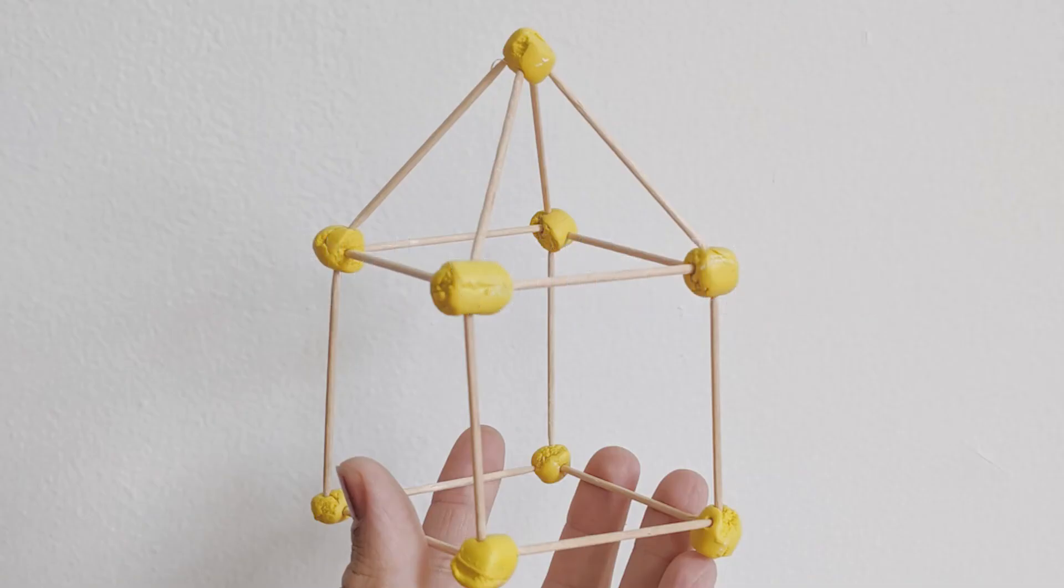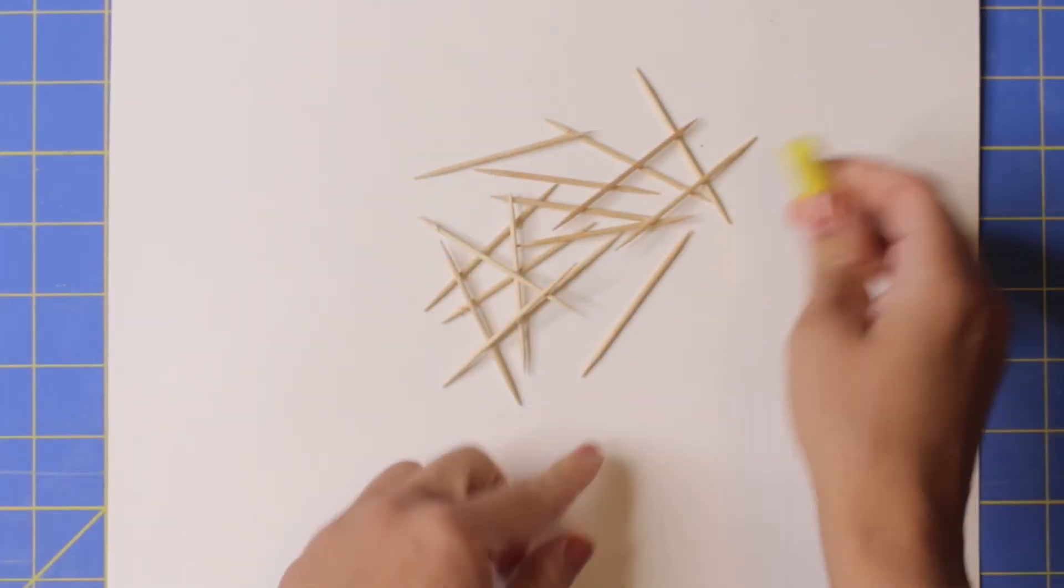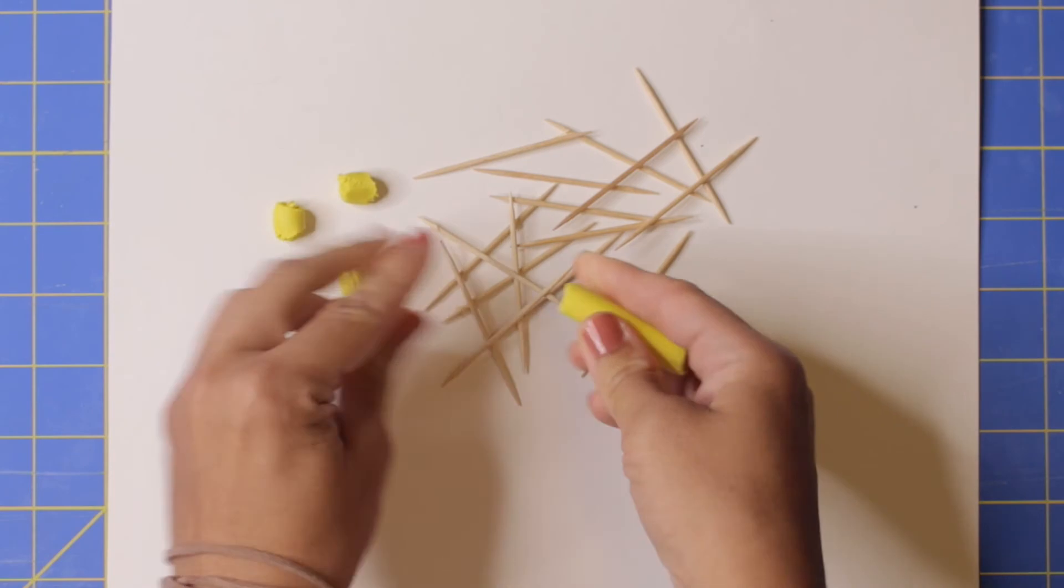And finally, activity number three, building with line. For this activity, you will need clay and toothpicks.